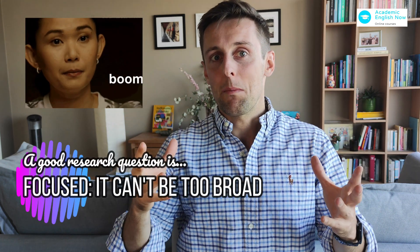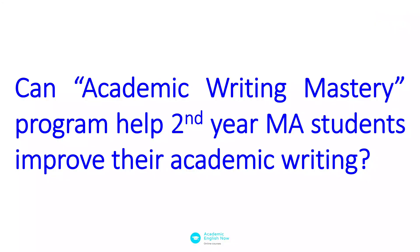First of all, a research question should be focused. If you ask a research question like, 'Can online courses improve academic writing?' — this is too general, it's too broad, you need to focus it. For example, you could pick a specific online academic writing course to test, or a specific group of people, or preferably both. So we would change it to something like, 'Can the Academic Writing Mastery Program help second-year master's students write a better thesis?'